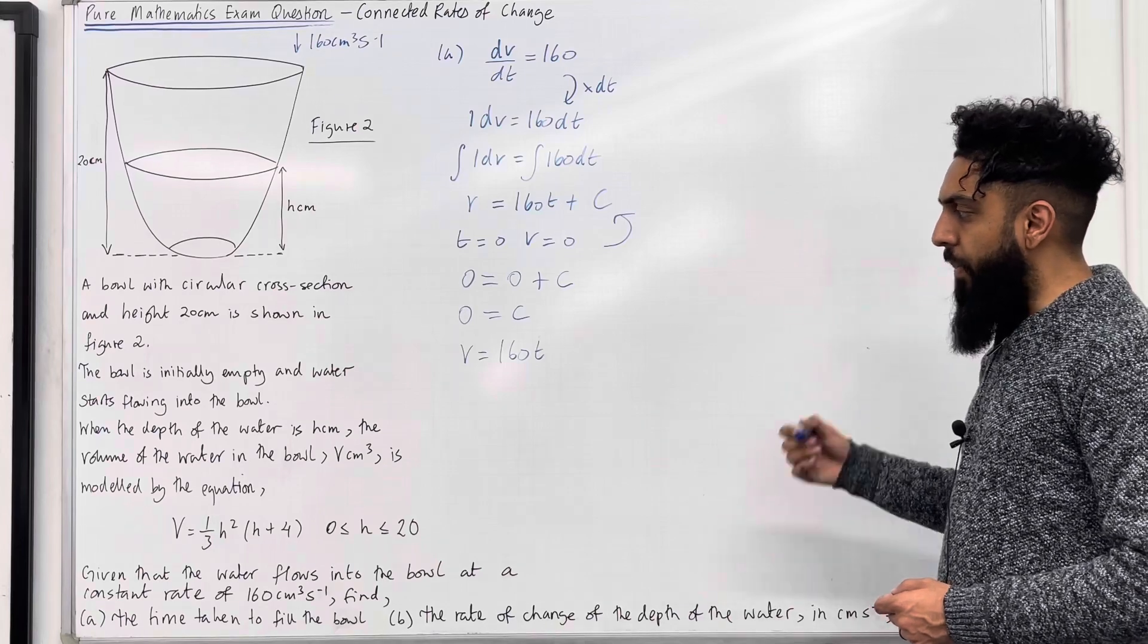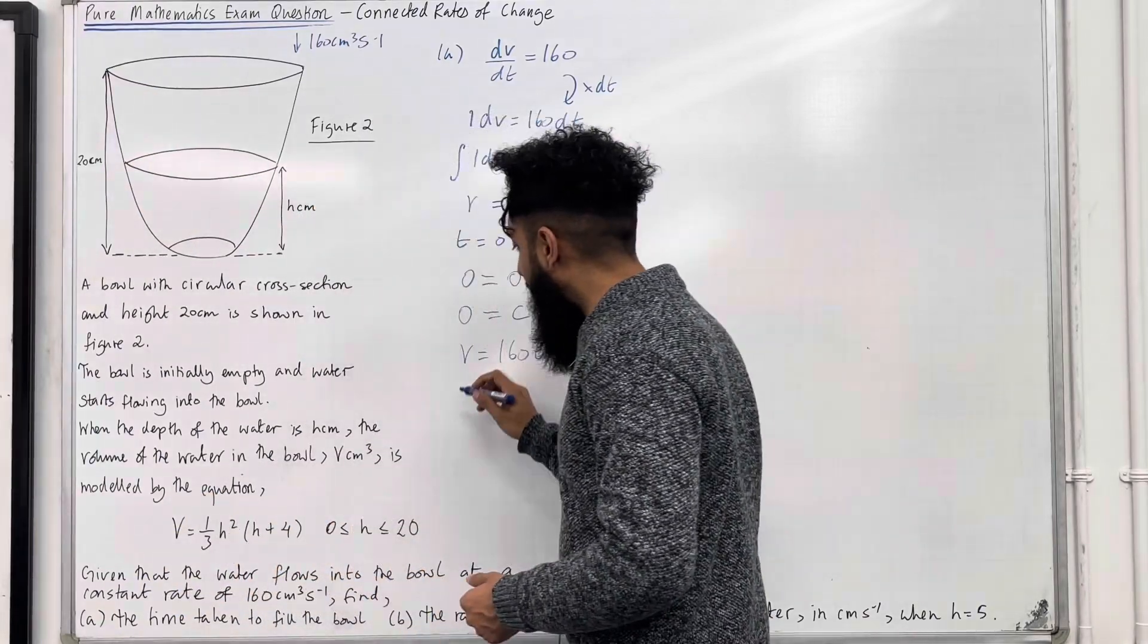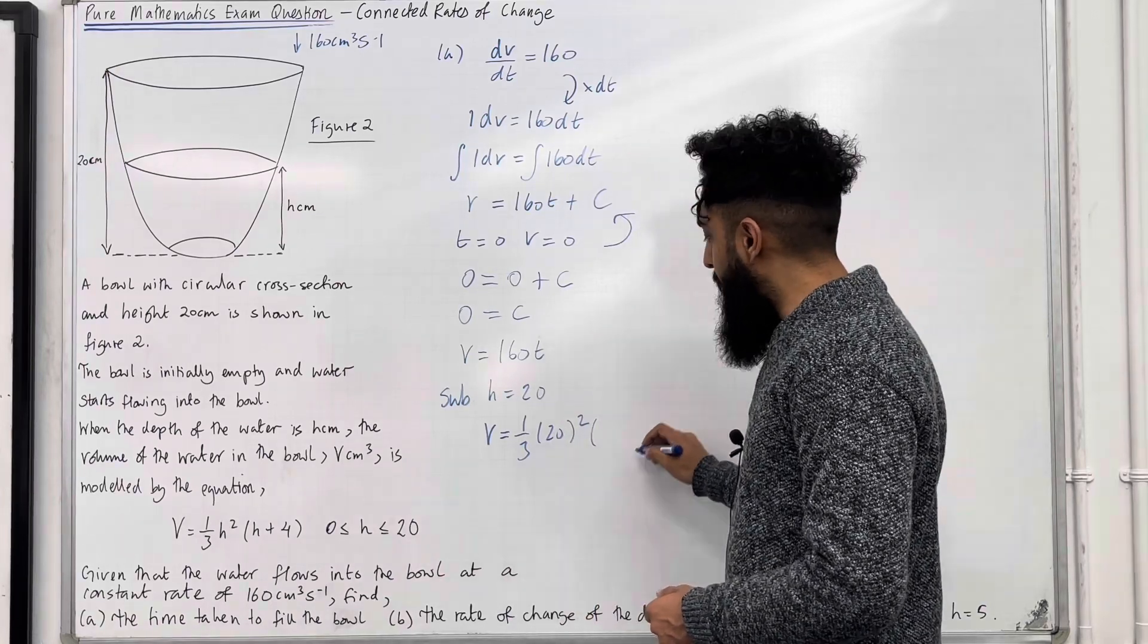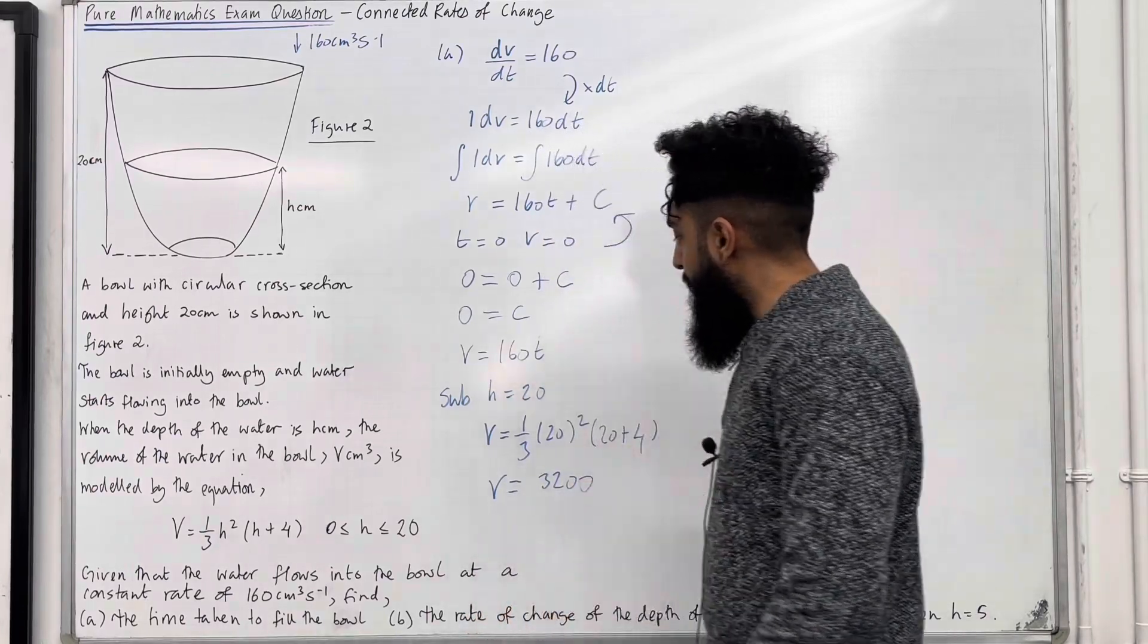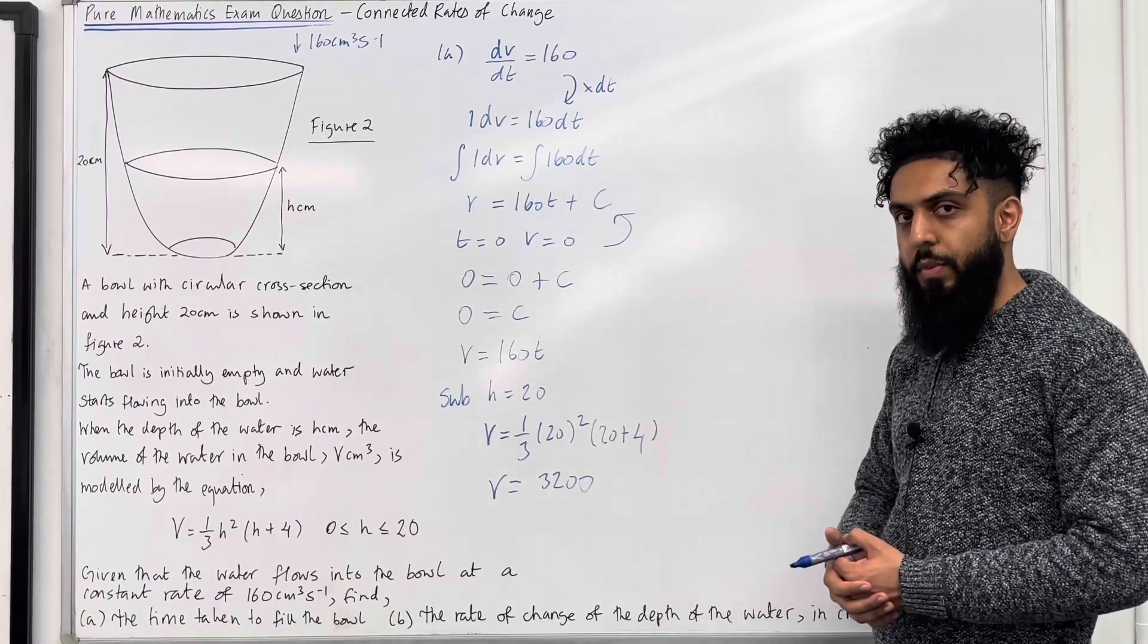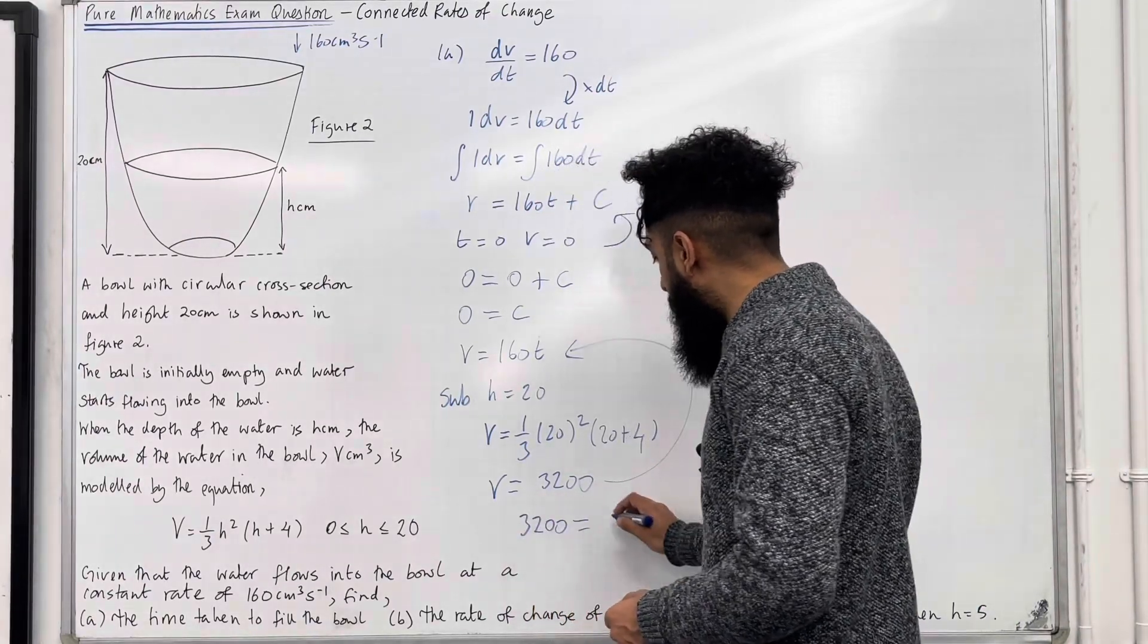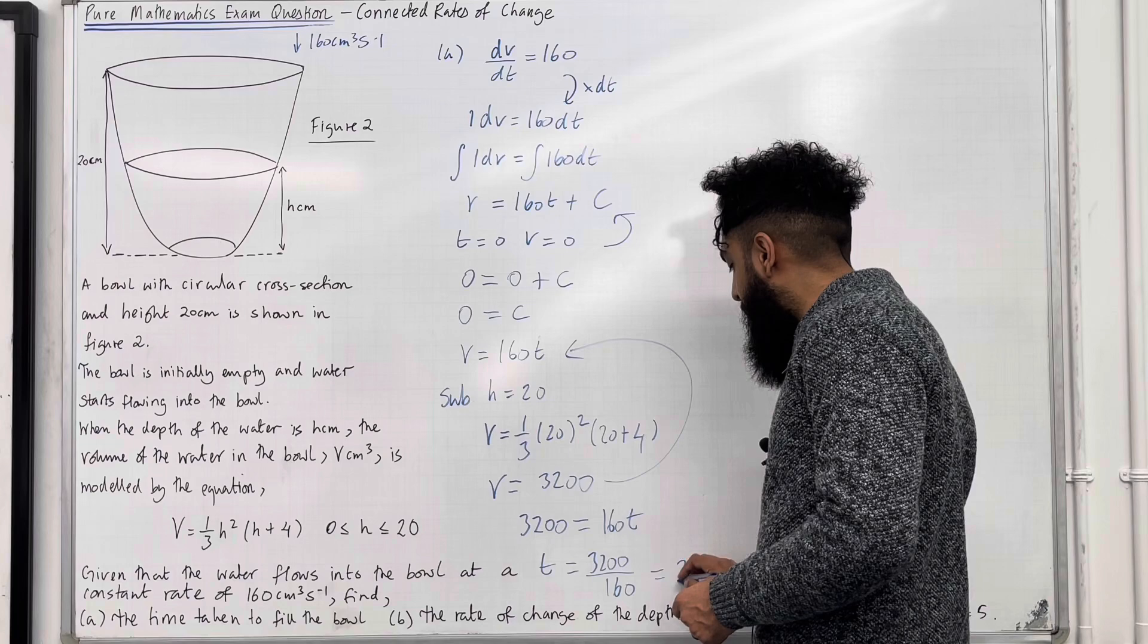Now, we want to work out the time taken to fill the bowl. The bowl is completely full of water when the depth h of the water in the bowl is precisely 20 centimeters. So, now I'm going to substitute h equal 20 into the volume formula. I've got v equal 1/3 multiplied by 20² multiplied by (20 + 4). If I put this into my calculator, I get precisely 3,200. When the bowl is completely full of water, the volume of water in the bowl is 3,200 cm³. Now we can substitute this into this formula to work out the time taken to fill the bowl. We've got 3,200 equal 160t. So, t is going to equal 3,200 divided by 160. This gives me 20 seconds.